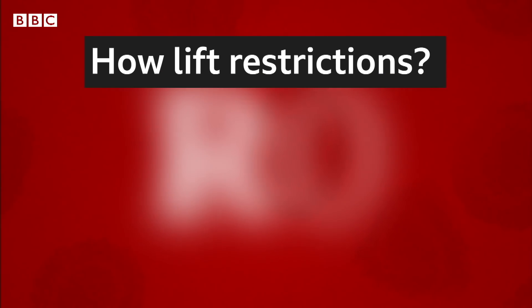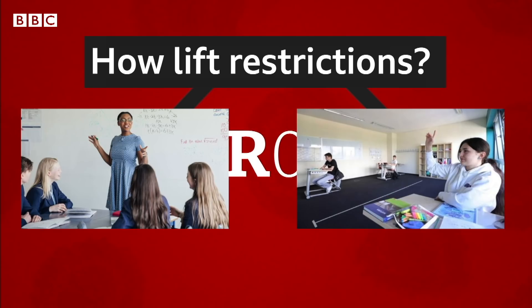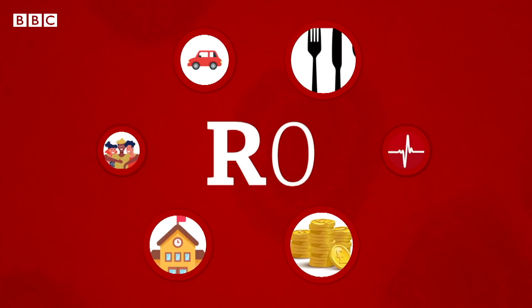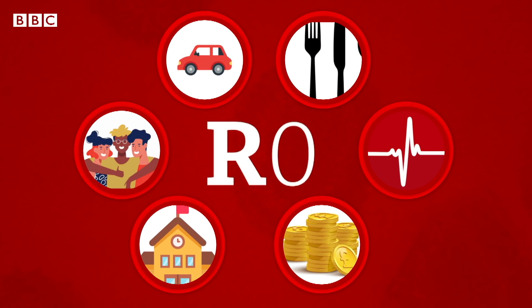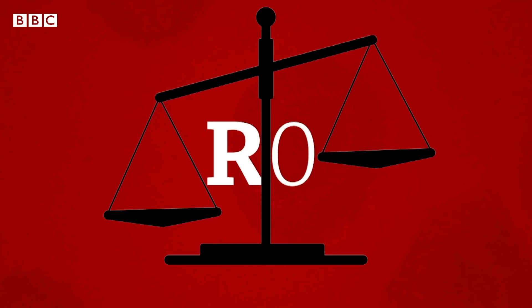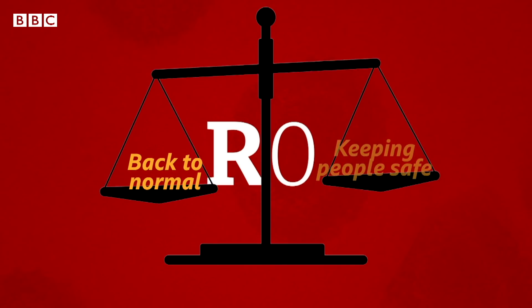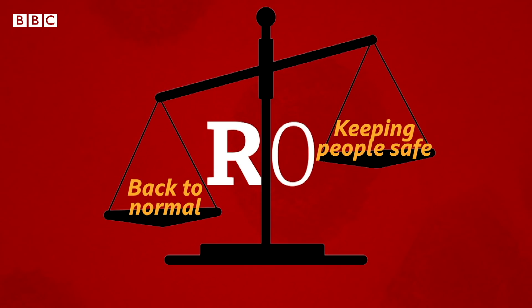And how restrictions are lifted exactly will affect the R number too. For instance, what happens if schools reopen? What if only some pupils go back? These decisions have to be made for everything. And the answers aren't clear. Governments need to carefully balance this need to get countries moving again while still keeping the public safe.